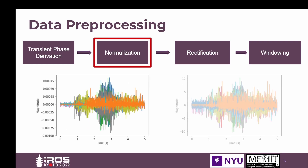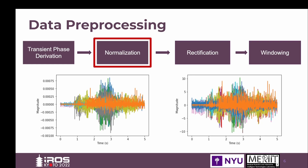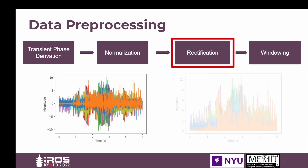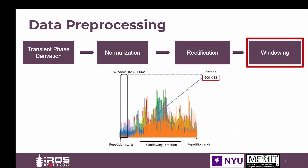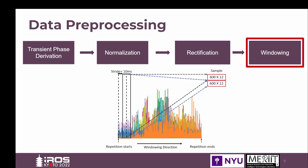We normalize the signals using z-score normalization with zero mean and unit standard deviation found from the training data. Then we rectify the normalized signals into their absolute values. Recognizing gestures from a single time stamp is extremely difficult, so we apply windowing on the rectified signals. Based on literature, we choose a window of size 300 milliseconds that meets the requirement of real-time implementation. The stride is 10 milliseconds. Therefore, each sample has a dimension of 600 by 12, and as the window slides, each stride produces a new sample window.